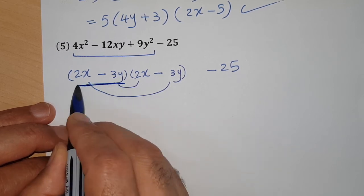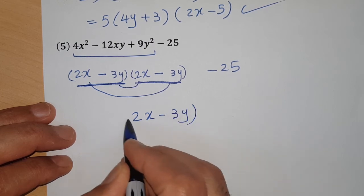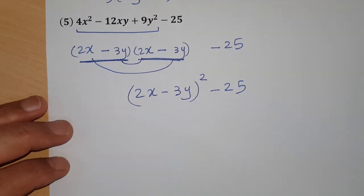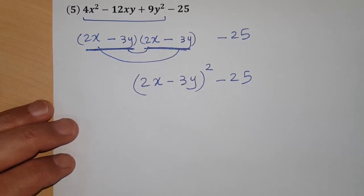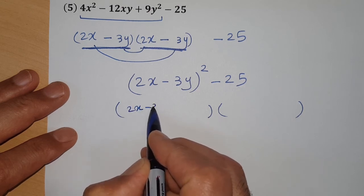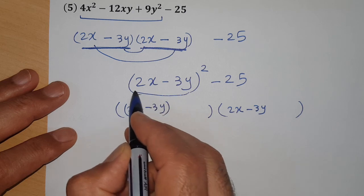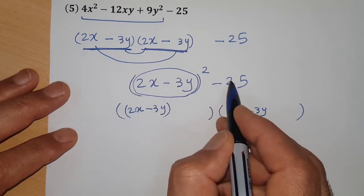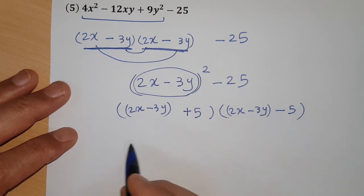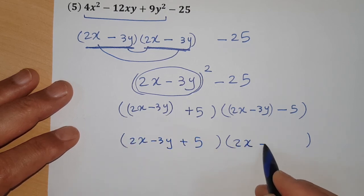So the expression becomes (2x - 3y)² - 25, which is a difference of two squares. Treat (2x - 3y) like a single term x, and split: (2x - 3y - 5)(2x - 3y + 5). The 25 splits into positive 5 and negative 5. You can remove the small inner parentheses since they're not needed. The final factored form is (2x - 3y + 5)(2x - 3y - 5).